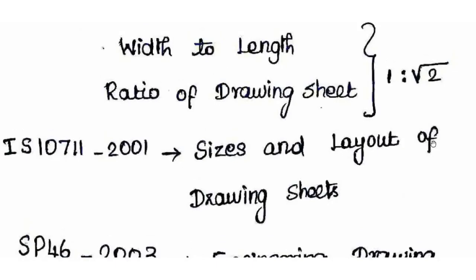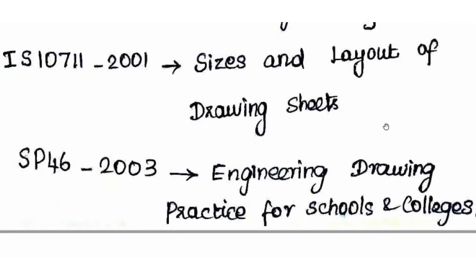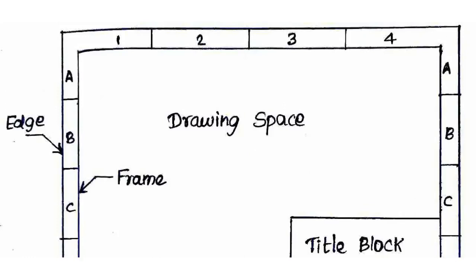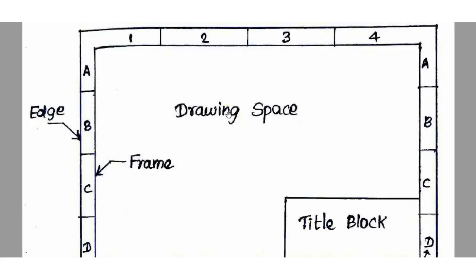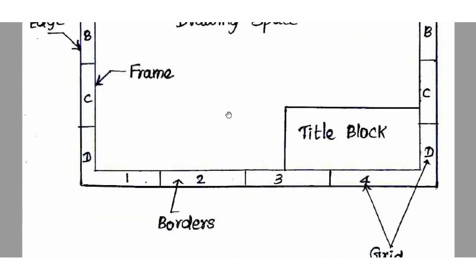We use IS codes for drawing sheets. The relevant code is IS 10711 for the size and layout of drawing sheets. The SP 46 code covers engineering drawing practice for schools and colleges. We use the same codebook in the field.